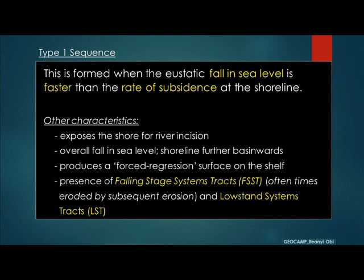During a Type 1 sequence setting, the shoreline will have moved further basinward for the whole of the onshore shore to be exposed — almost all the way down towards the shelf break in the basinward direction. There is production of a surface called the forced regression on the shelf. The sediments associated with this type of sequence are called the Falling Stage Systems Tract, though some authors prefer to include the whole package as part of the Low Stand Systems Tract.